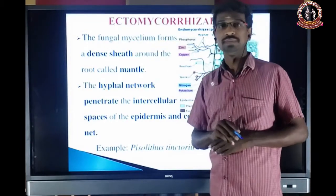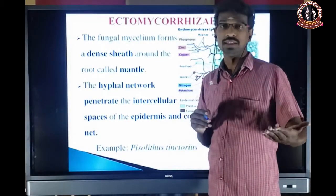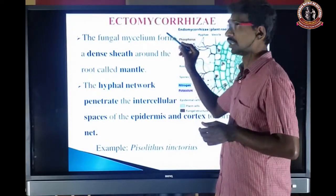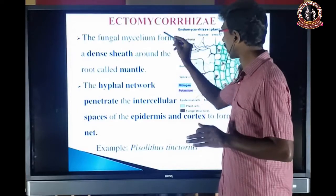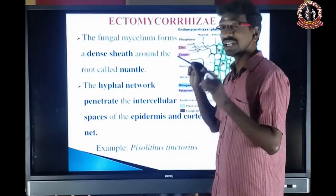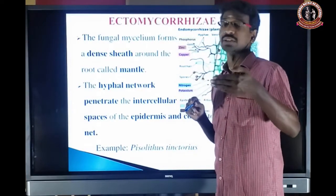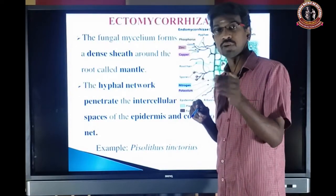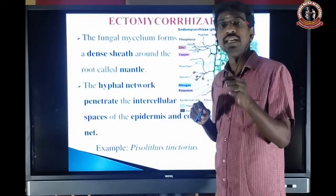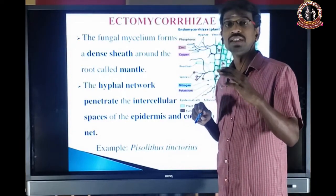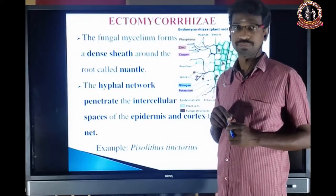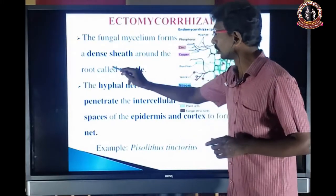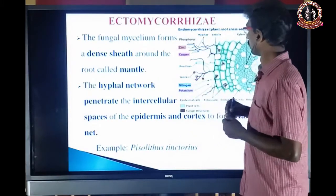Ecto means outside, endo means inside. The fungus — the symbiotic association — is called Mycorrhizal. In Ectomycorrhizal, the fungus is present on the surface of the root and also penetrates a little into the intercellular space of the epidermis and cortex. The dense fungal mycelium formed around the root is called the mantle.